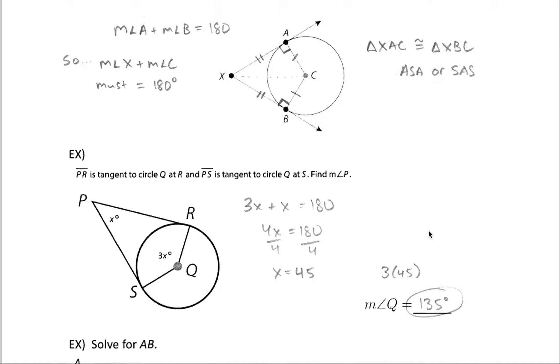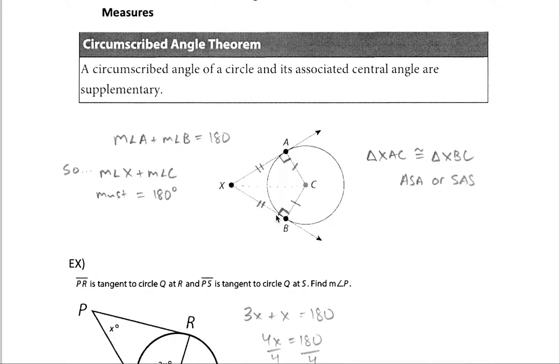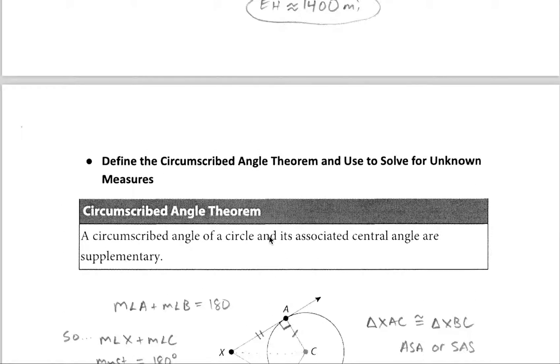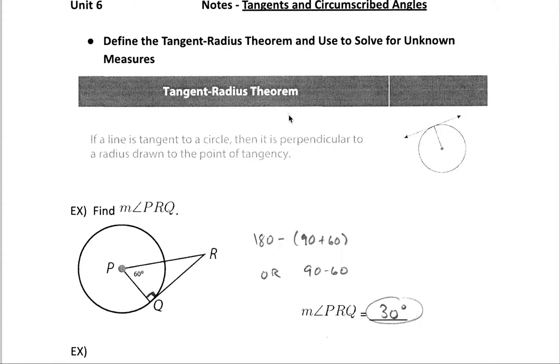All right, so a couple of different things. Circumscribed angles are supplementary to central angles or the corresponding arcs. And the tangent lines created in that similar diagram are also congruent. And the tangent-radius theorem, which got us to that right triangle to begin with, saying that the radius is perpendicular to a tangent line at that point of tangency.